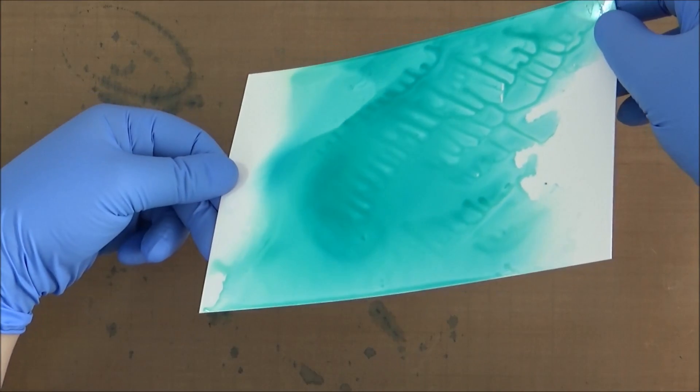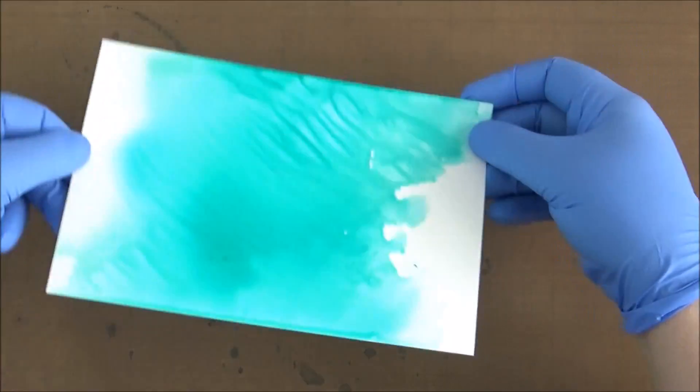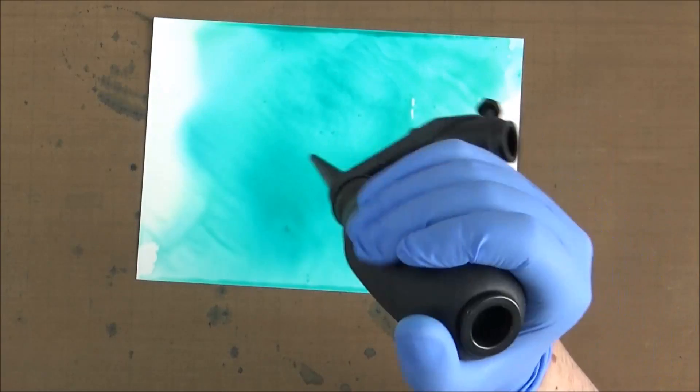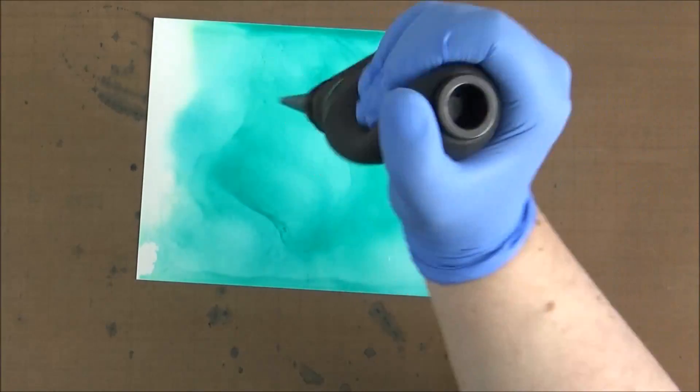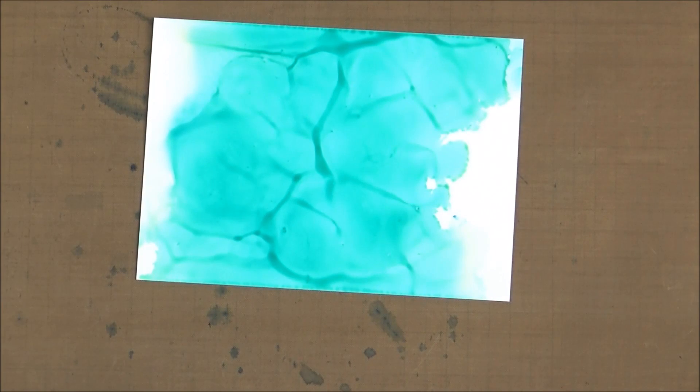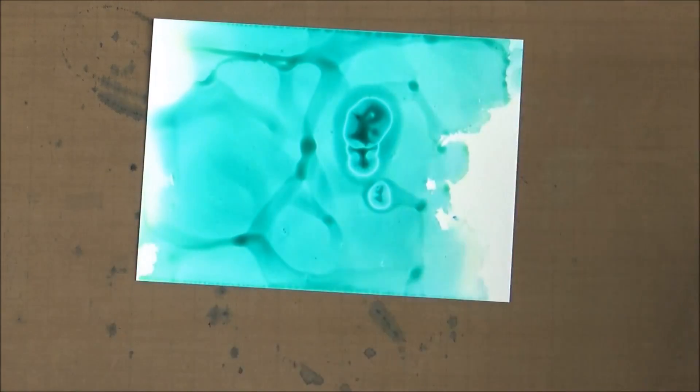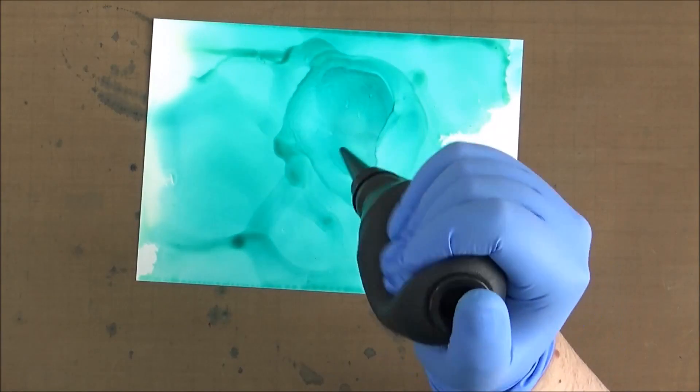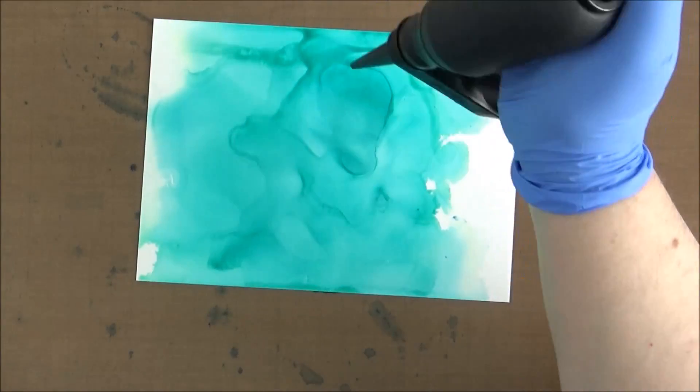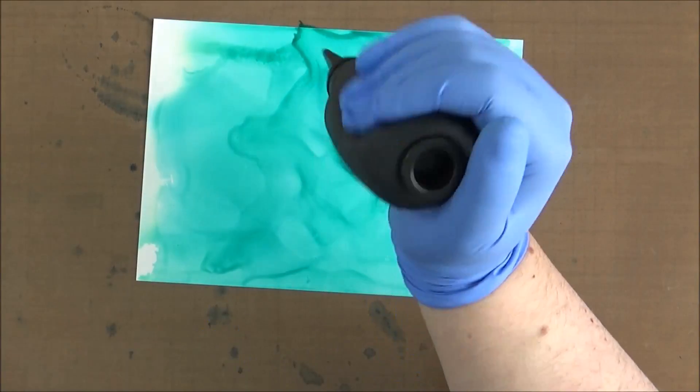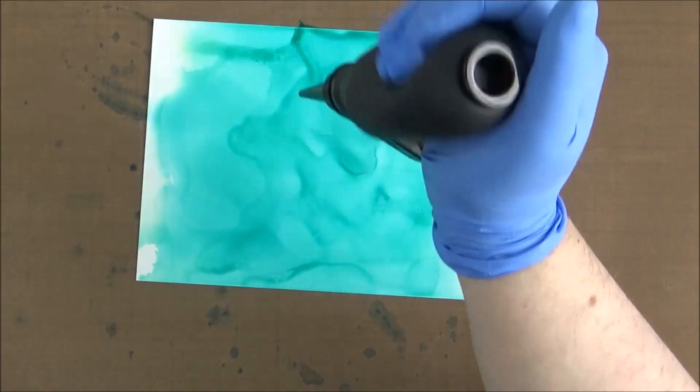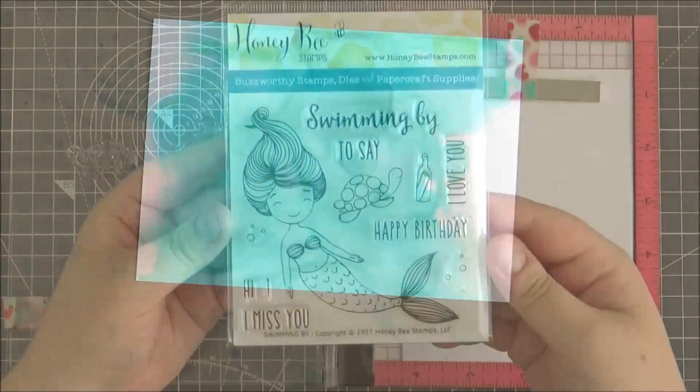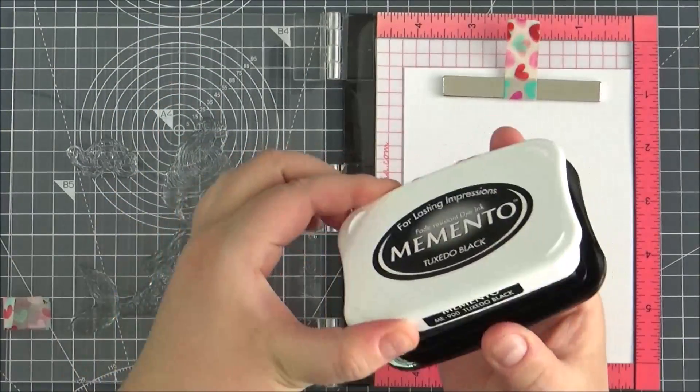The colors move quite well with the blending solution keeping them wetter for longer so you can move them around more than usual. I'm using a Tim Holtz spritzing tool that spritzes air onto the piece. You can use it with distress markers, but it works really well for moving alcohol ink. I'm adding a little bit more of the darkest shade and moving that around with the spritzing tool. Once I'm happy with that, I set it aside to dry. I used gloves because they can get a little bit messy.